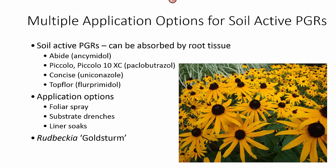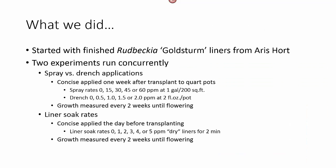We're going to talk about the application methods available for soil active PGRs. Soil active PGRs are those that can be taken up by the root tissue. Today we're actually going to be talking about Concise, or uniconazole, and for our Rudbeckia trials we are using foliar sprays, substrate drenches, and liner soaks.